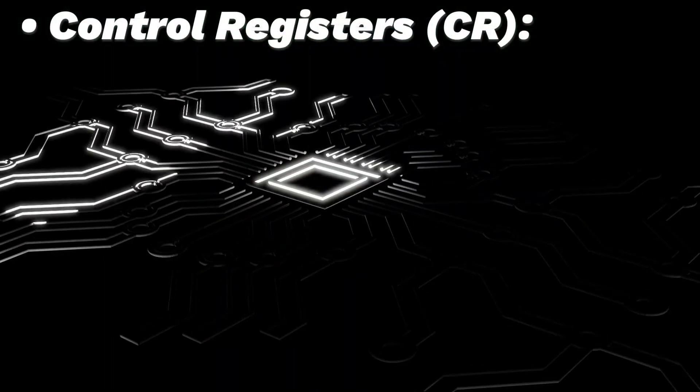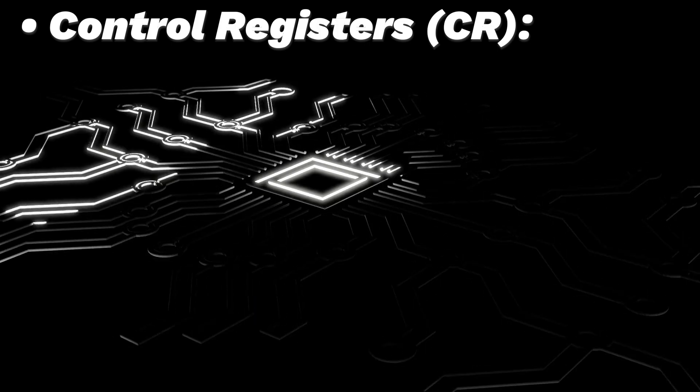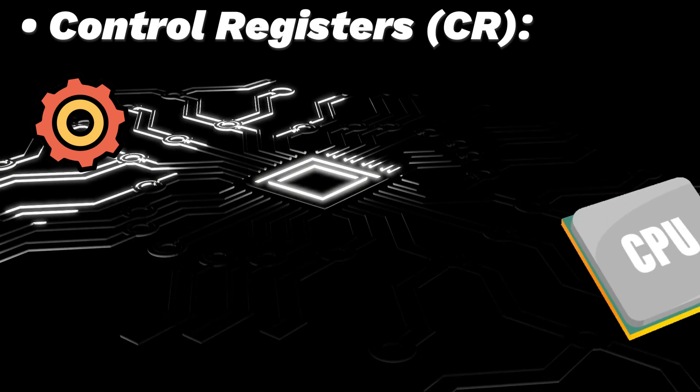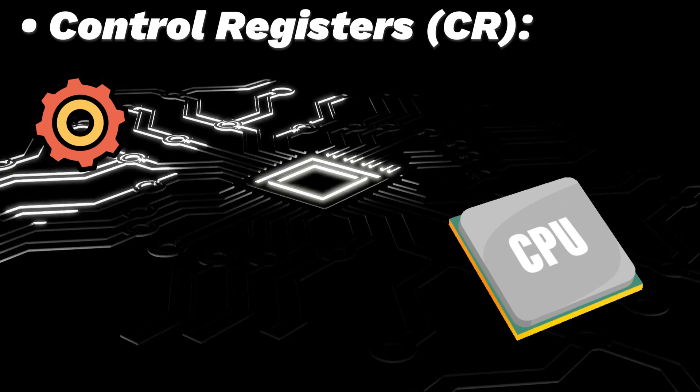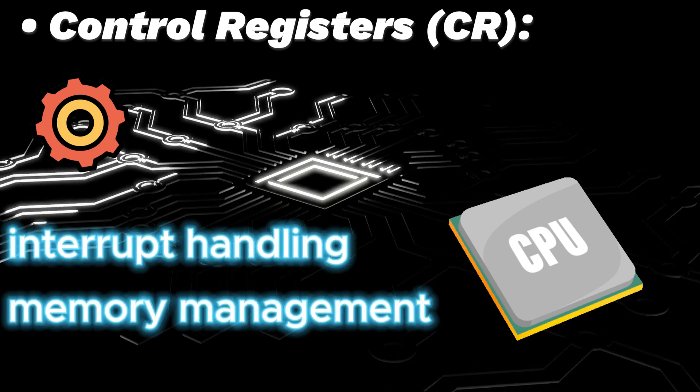Control registers: Control registers manage various control settings and parameters related to the CPU's operation, such as interrupt handling, memory management, and system configurations.